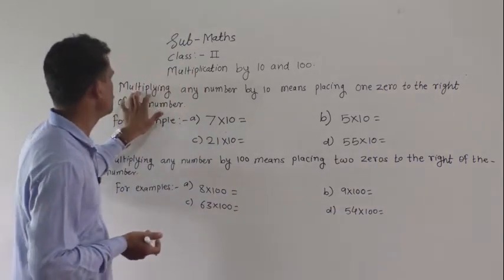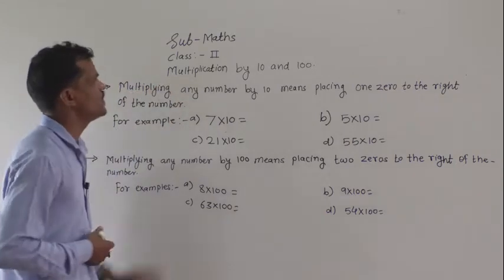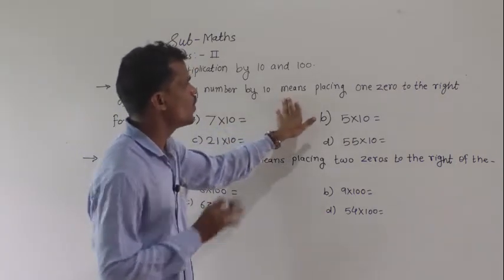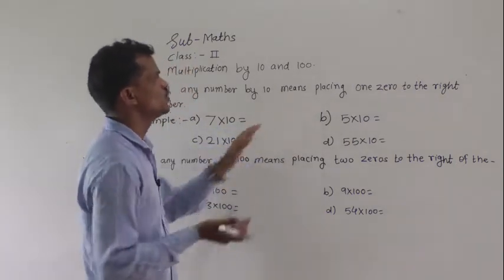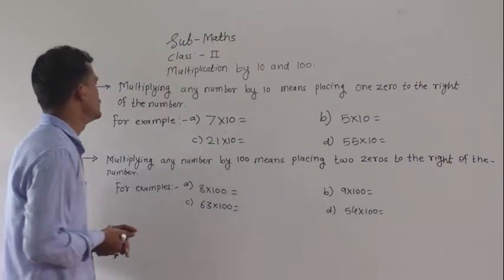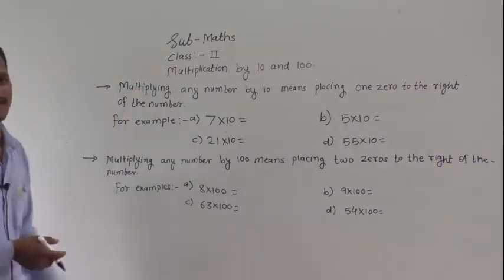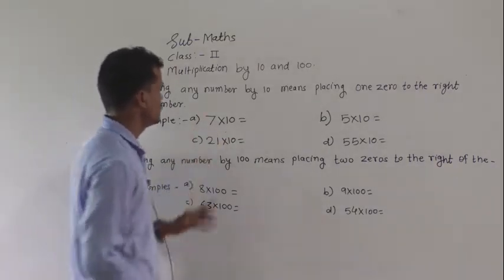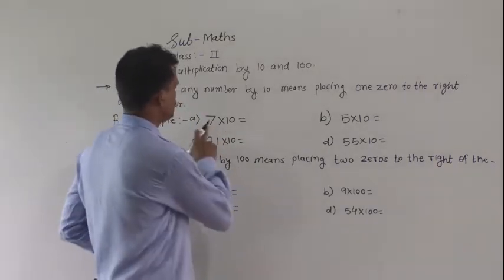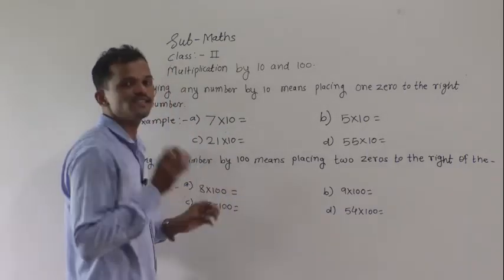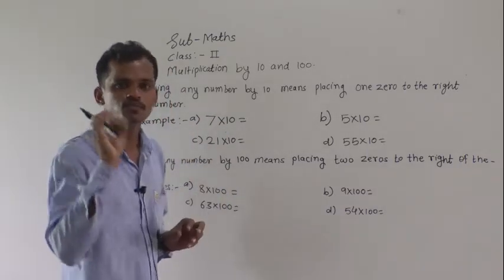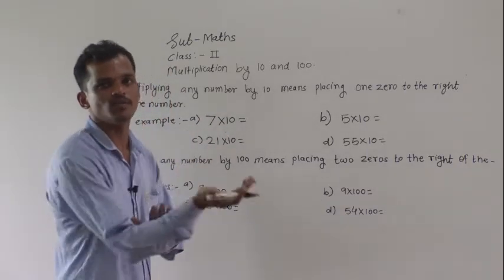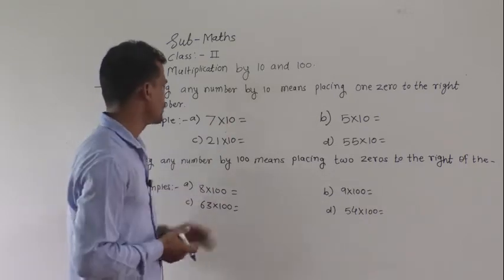Multiplying any number by 10 means placing one zero to the right of the number. See the example — it is very simple. Multiplication by 10 means you have to put one zero at the right of the number.